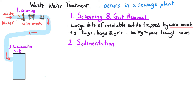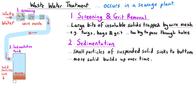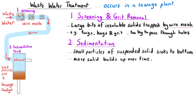The water then passes into a sedimentation tank where it is left to stand. The small particles of suspended solid are more dense than the water, so over time they sink to the bottom and settle. This solid builds up and becomes thicker, becoming referred to as sewage sludge. The less dense liquid stays at the top and is called the effluent. The solid and the liquid are then separated and treated in different ways.